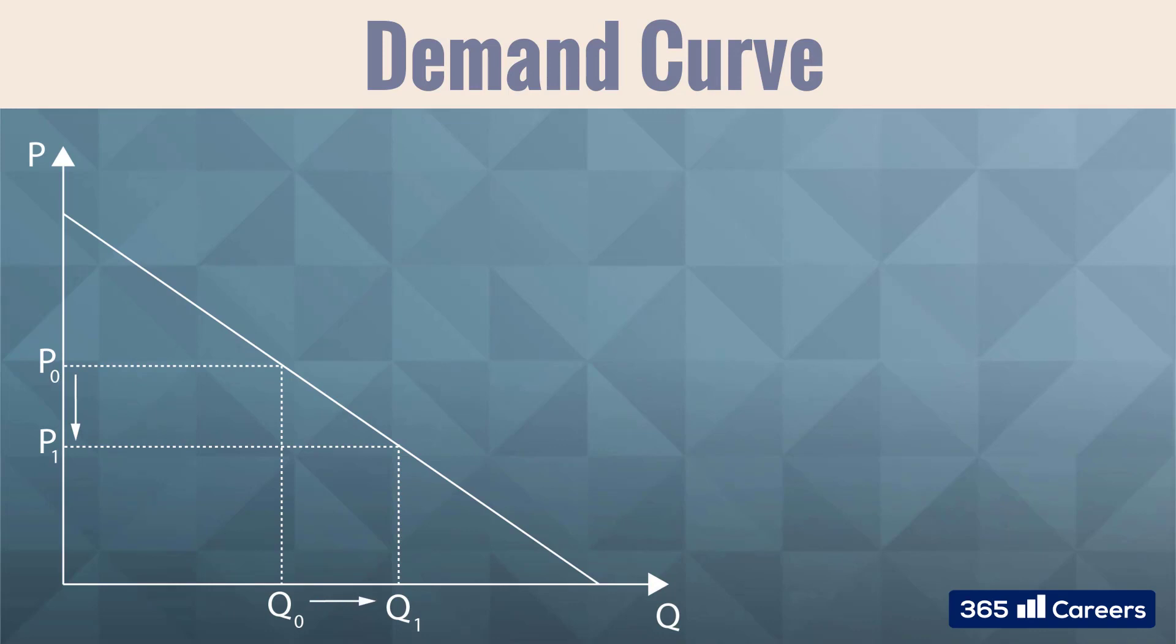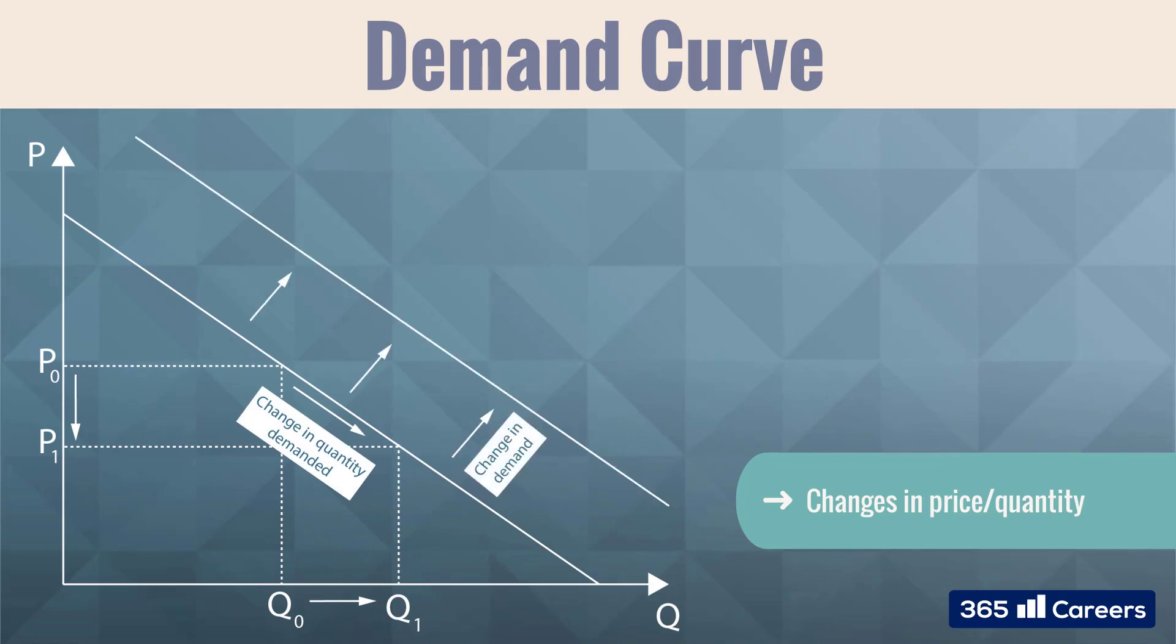Please pay attention here. Movements in price shift us along the demand curve. However, there are other factors which cause shifts in the curve itself. Any changes in the overall income levels in the economy and the price of substitutes or complementary products would cause the whole demand curve to shift upwards or downwards.